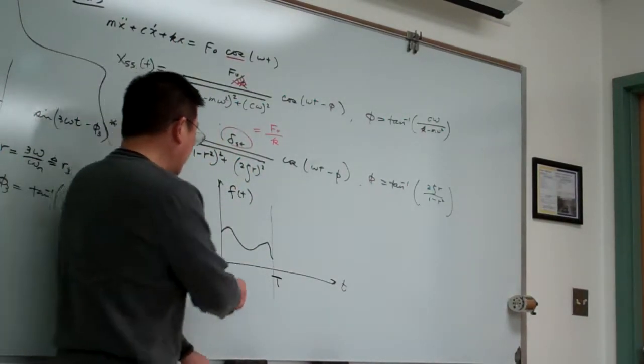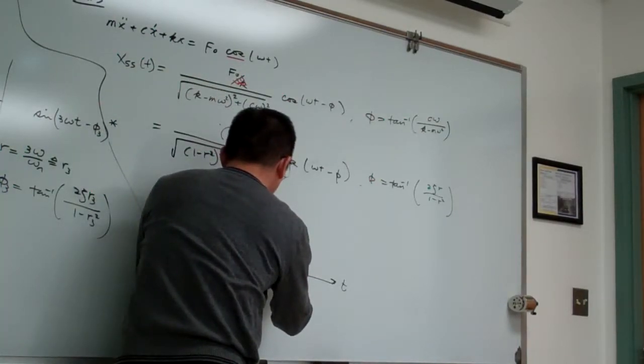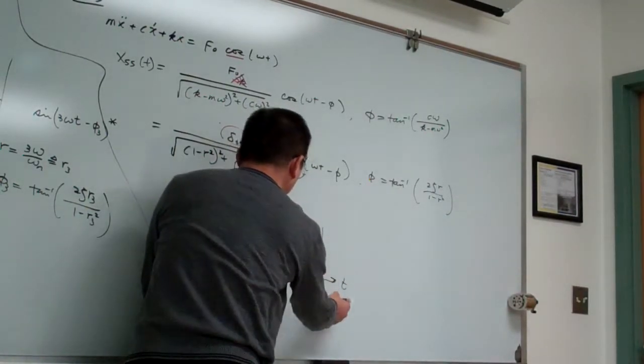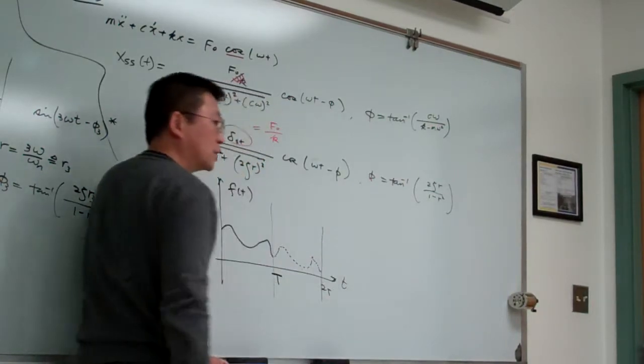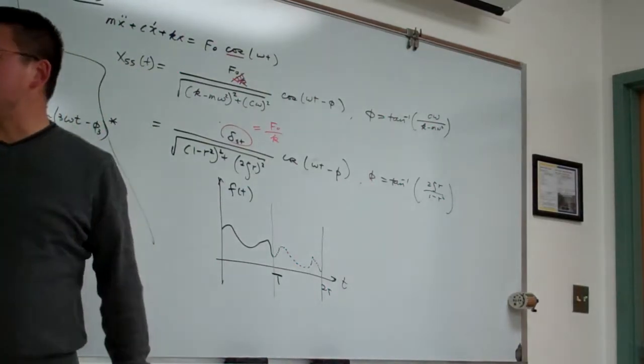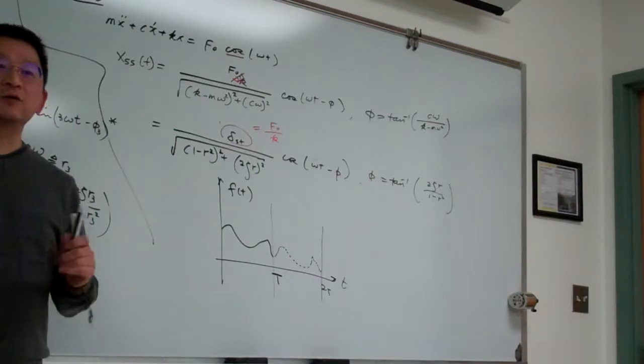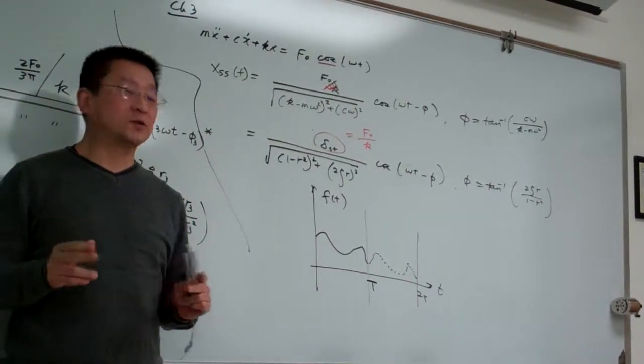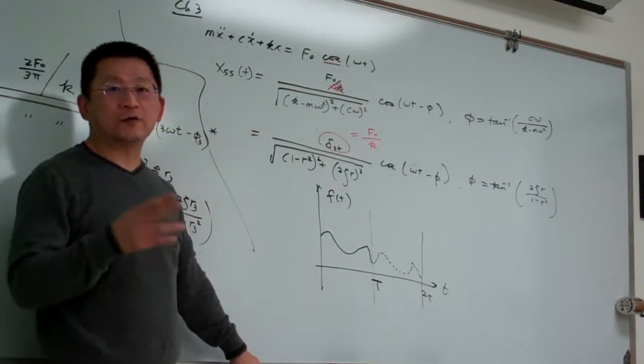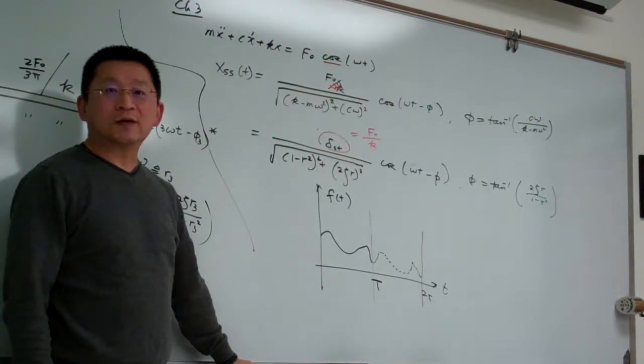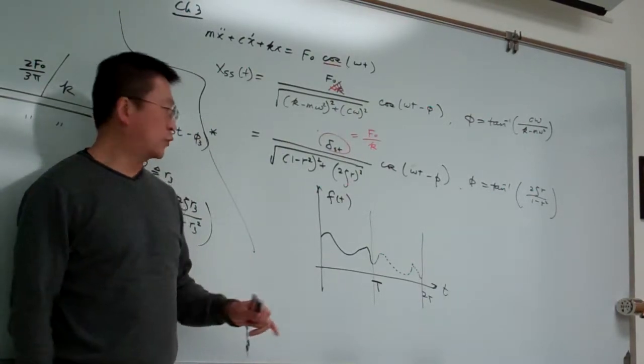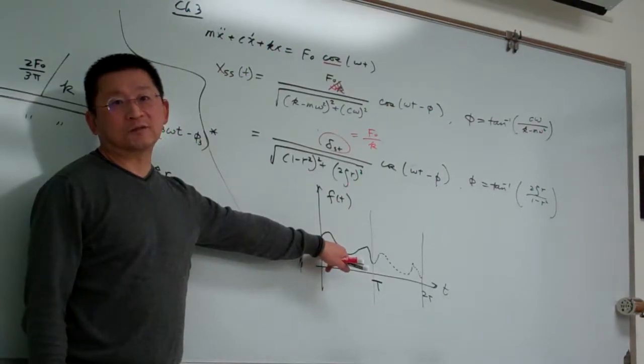So irregular means this is repeated. Basically, when the pattern is repeated we call it periodic. Irregular, as I define it, means there's no simple geometry that can describe it. For example, usually if we want to describe such a curve, we have to use higher order polynomial to approximate.